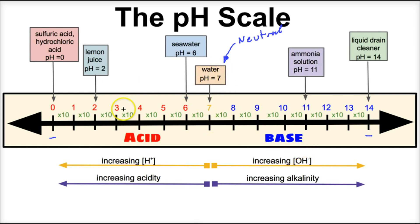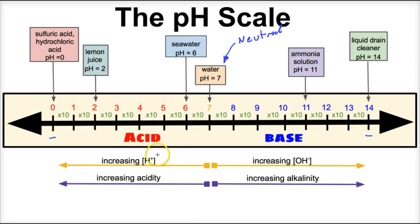If we take a look at the pH scale, here's how it works. As we move from a pH of seven to a pH of zero — moving this way on the pH scale — the amount of hydrogen ions floating around in that solution increases. It increases going from seven to zero, and therefore the acidity of that acid increases as well.